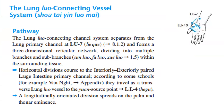Let's discuss in detail the pathway of the lung luo-connecting channel. The lung luo-connecting channel system separates from the lung primary channel at lung 7 and forms a three-dimensional reticular network, dividing into multiple branches and sub-branches within the surrounding tissue. Horizontal divisions course to the interiorly-exteriorly paired large intestine primary channel. According to some schools, they travel as a transverse lung-luo vessel to the yuan source point, to LI4. A longitudinally orientated division spreads on the palm and thenar eminence.